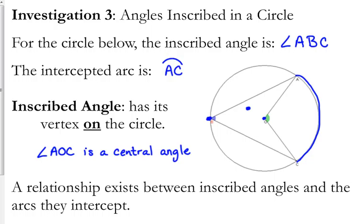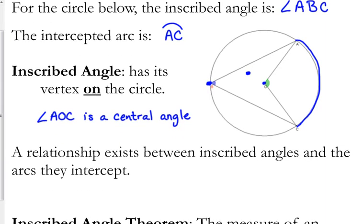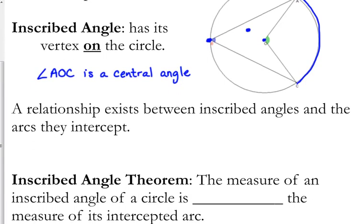And there is a relationship, just like there is with central angles. Central angles, remember, the measurement of the central angle is the same as the measurement of the arc. There is a relationship that exists with inscribed angles. And I have a bunch of diagrams there on your paper to help you discover what that relationship is.